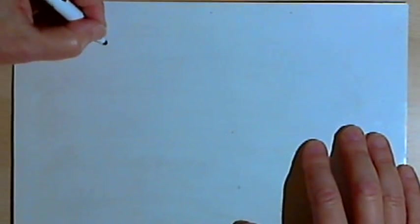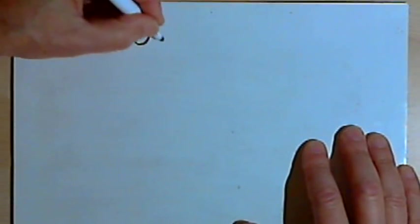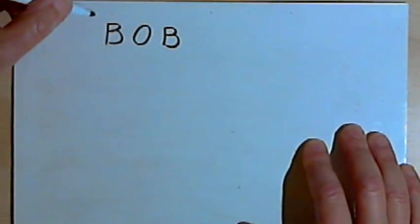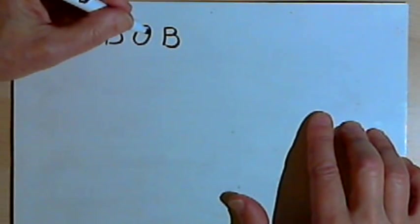Let's say that I've got three letters, B, O, B, like the name Bob. And I want to find out how many permutations there are going to be.